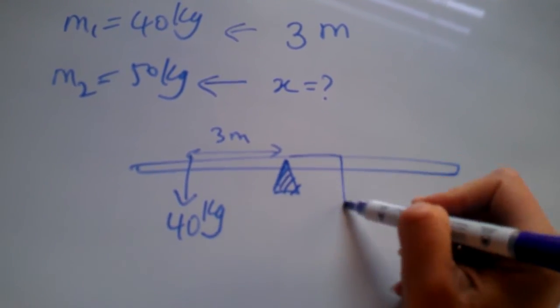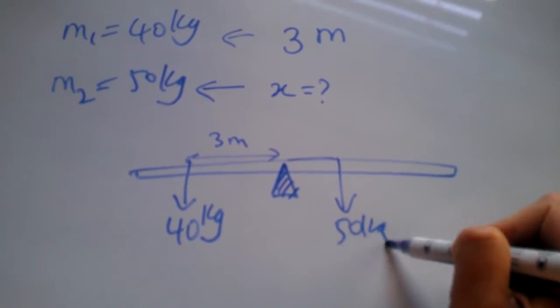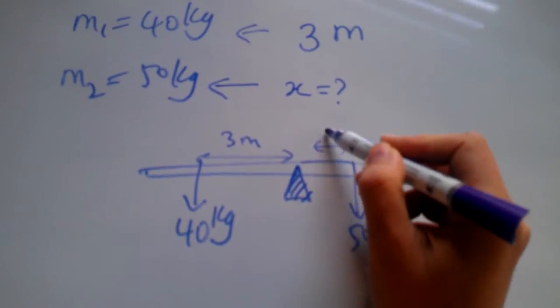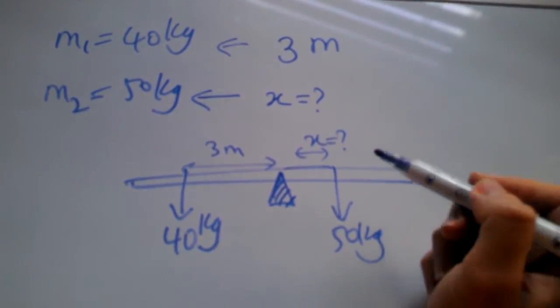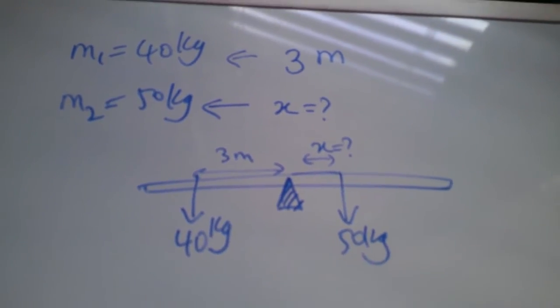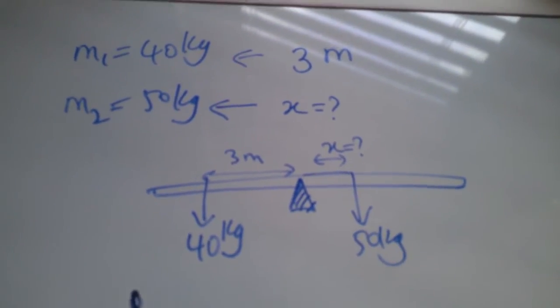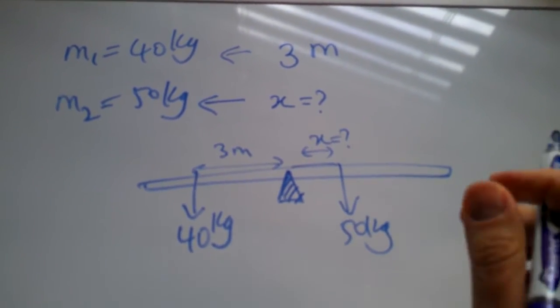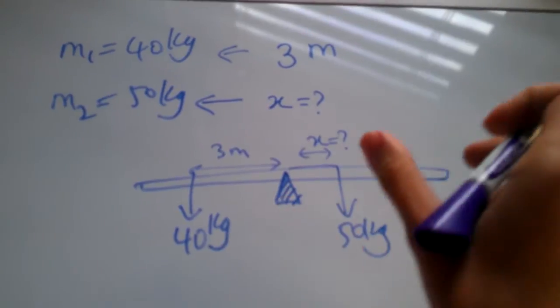This is the lighter kid, about three meters away, so here is the 40 kilogram kid. And then there is another kid that's about 50 kilograms. Now we are wondering where this kid is going to be sitting in order for the whole seesaw to be balanced and no net torque is going to be exerted on it.